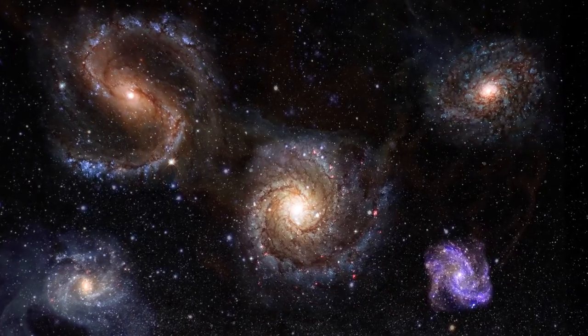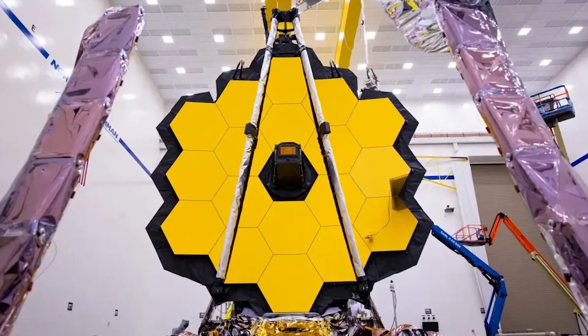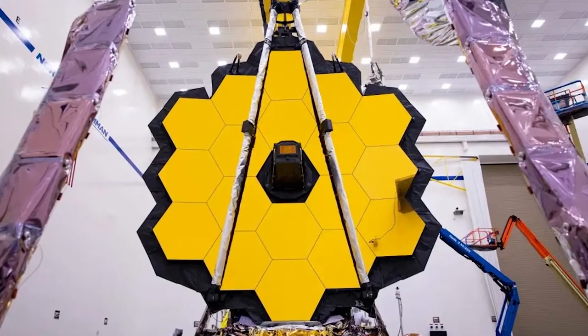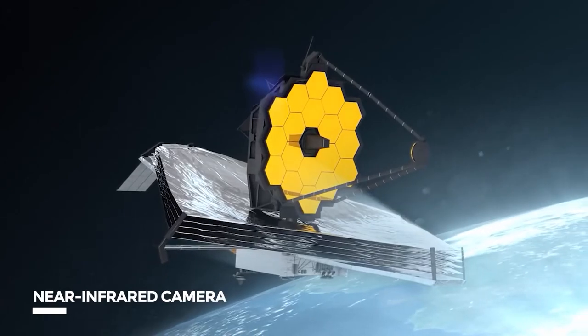Webb will be looking at some incredibly faint objects, such as the very first galaxies to form after the Big Bang. Let's now discuss the four major scientific instruments used in James Webb Space Telescope. One, near-infrared camera or NIRCAM.